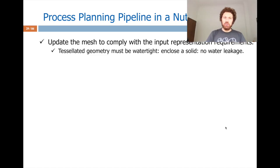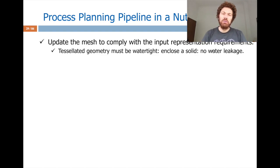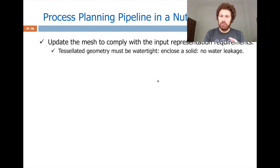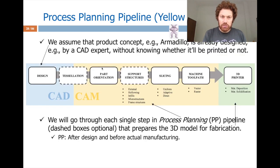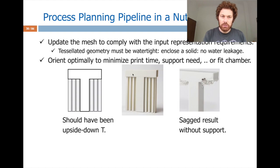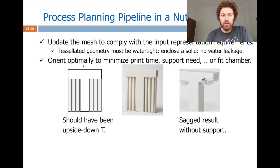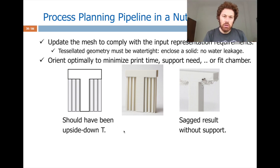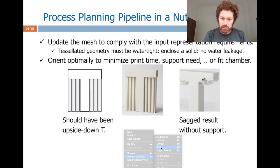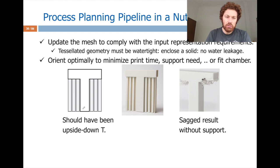In process planning, first you update the mesh to comply with input representation requirements. The tessellated geometry must be watertight — it must not leak any water, meaning it must enclose a solid. Then comes part orientation: you orient the model optimally to minimize print time, support needs, and fitting within the printer volume.